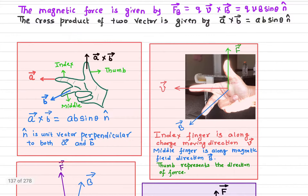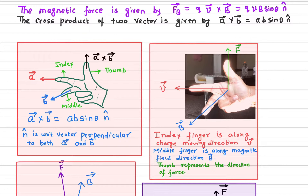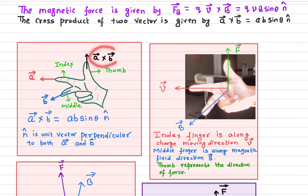So how do we find out the direction? You have to use your right hand — remember, right hand, not the left hand. You have to align the middle finger, index finger, and thumb so that they are mutually perpendicular. Here is the diagram — you have to align your fingers this way. If you're trying to find out A cross B, your index finger has to align in the direction of vector A, your middle finger in the direction of vector B, and then your thumb will point out in the direction of A cross B. This gives you the direction of the n-hat vector.